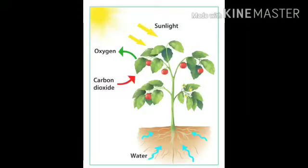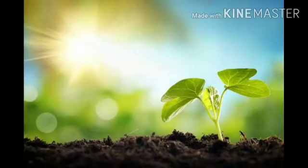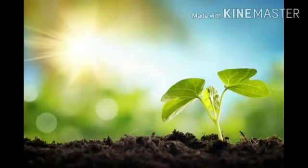Light: Plants usually get the light they need from the sun. Plants use light as their energy. If a plant does not receive enough light, it will grow very slowly. But too much light can cause the plant and the soil to dry out. Different plants have different light requirements — some need bright light and some need direct light.